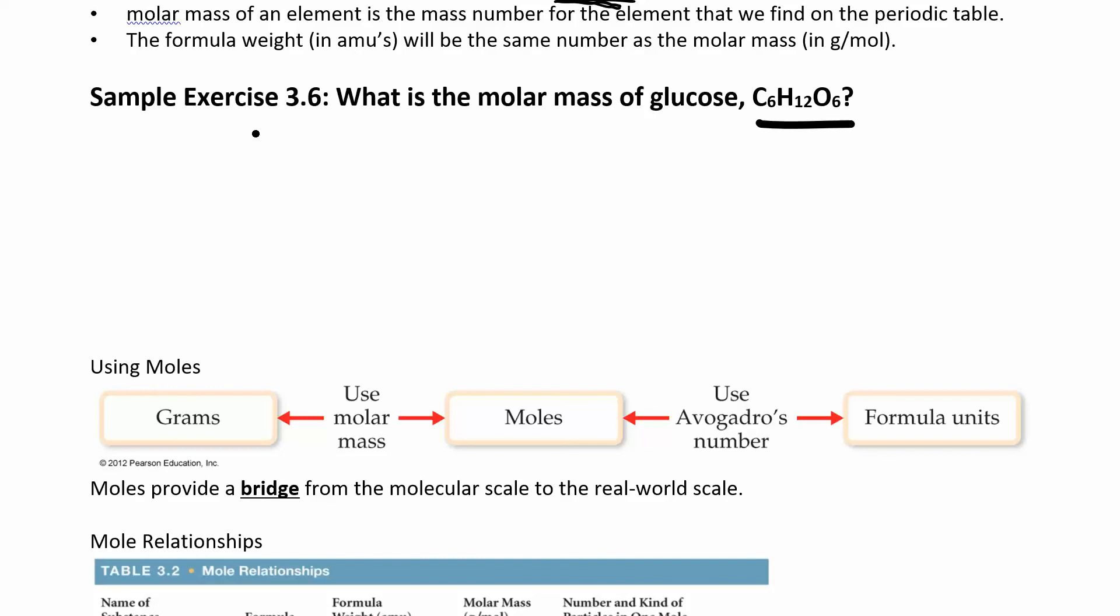So if I have six carbons, I have 12.01. Now my units are grams per mole because I'm looking for the molar mass. Molar mass is grams per mole, not the formula weight of one molecule or one formula unit.